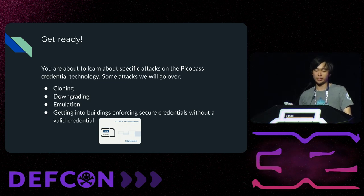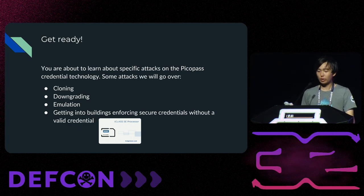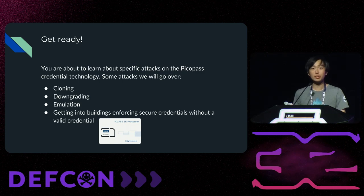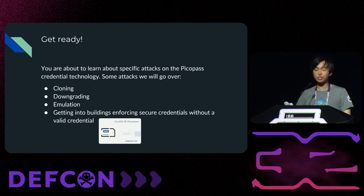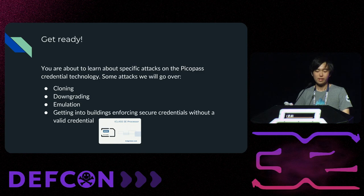We're also going to cover emulation. So what if that downgrade didn't work? We're going to do something by emulating a virtual credential. This can be done with electronic tools such as the Proxmark 3 or the Flipper Zero. This exploits the HID transitional credentials, also known as SR. And finally, the fun part of today's talk is going to be exploiting bugs in reader firmware to gain access to facilities that only enforce secure credentials.